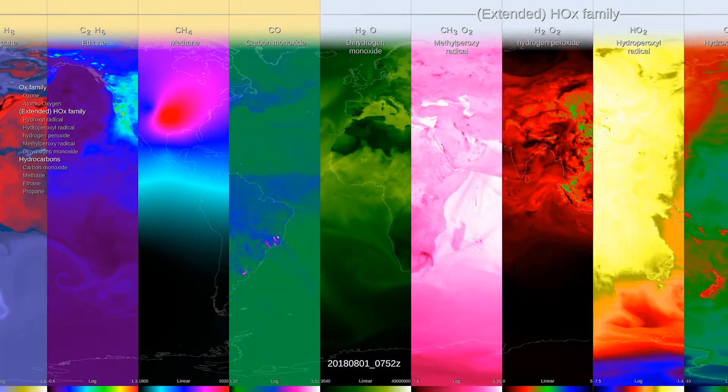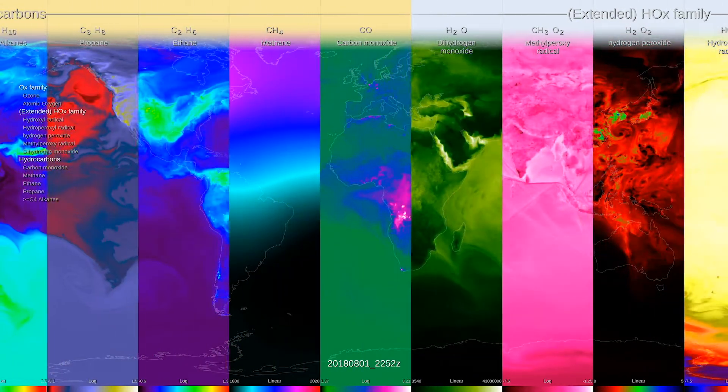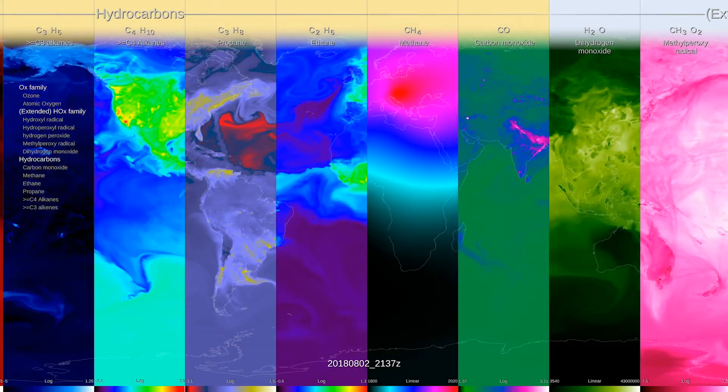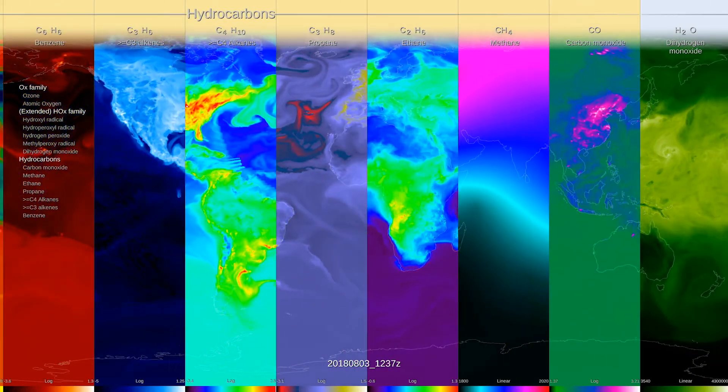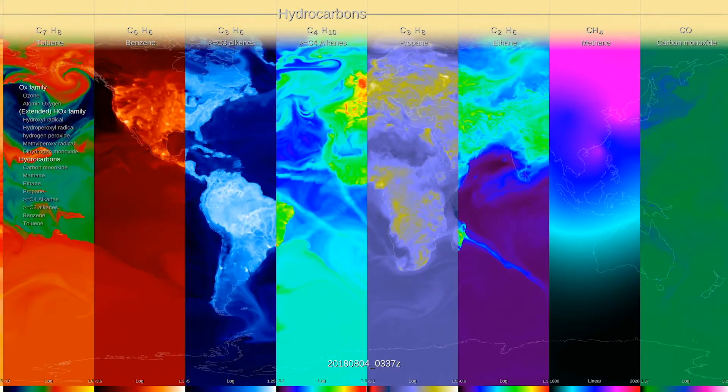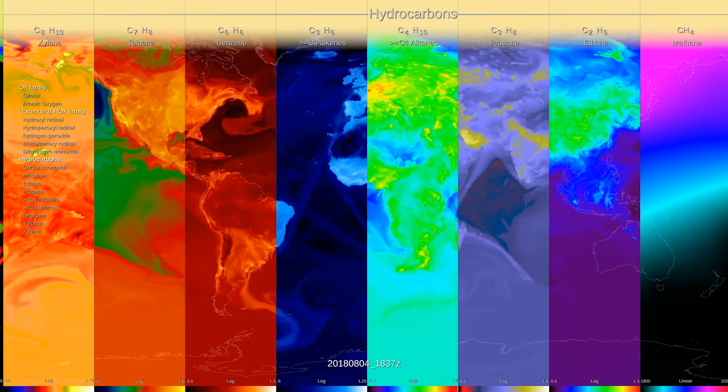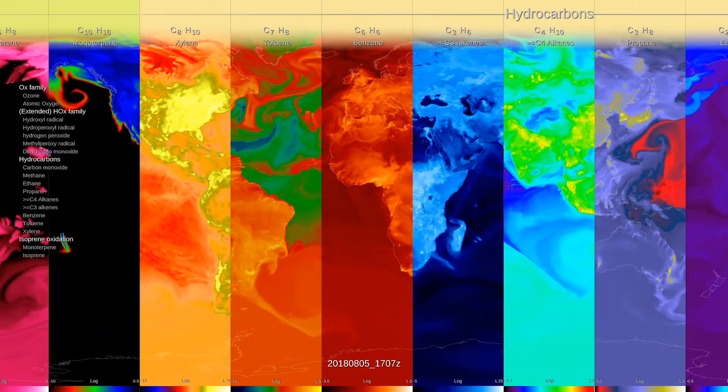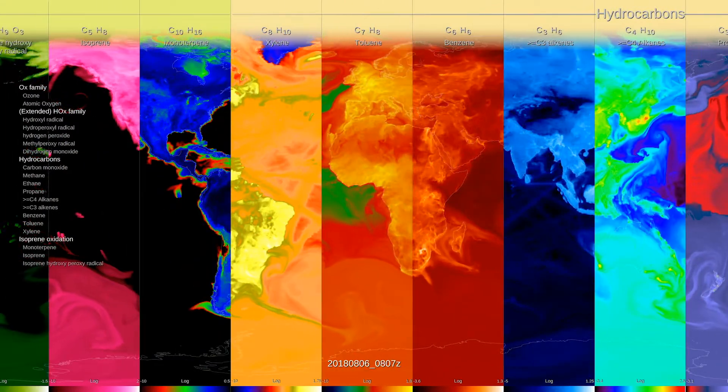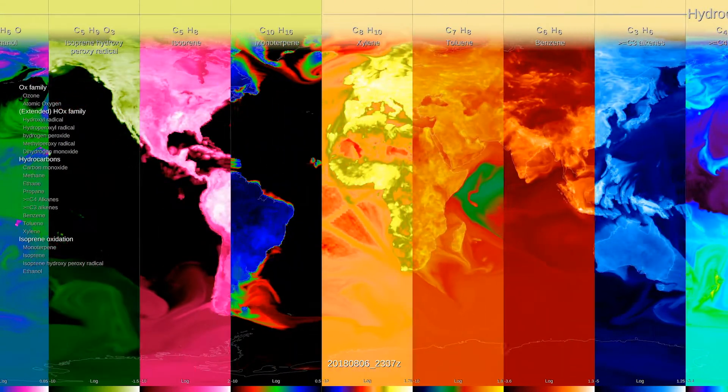So what we're seeing is a visualization of the composition of the atmosphere as it relates to air pollution. There are hundreds of chemicals that all contribute to those pollutants and you can see in this visualization what the computer model does.